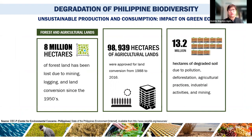Degradation of Philippine biodiversity results in unsustainable production and consumption, impacting the green economy. About 8 million hectares of forest land has been lost due to mining, logging, and land conversion since the 1950s. About 98,939 hectares of agricultural lands were approved for land conversion from 1988 to 2016. There are now many skyscrapers in Metro Manila and in highly urbanized cities. About 13.2 million hectares of soil has been degraded due to pollution, deforestation, agricultural practices, industrial activities, and mining.